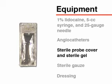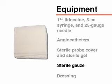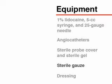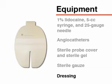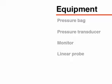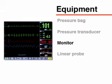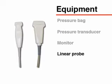You will also need a sterile ultrasound probe cover with sterile gel, sterile gauze, and materials for dressing and securing the catheter. You will also need a pressure bag, a pressure transducer, and a monitor that is appropriate for arterial catheter transduction. In order to assess the vasculature, you will need a linear array transducer ultrasound probe with a frequency range of 5–13 MHz.